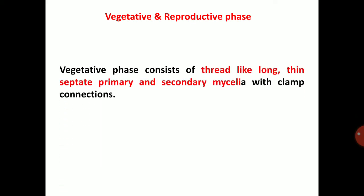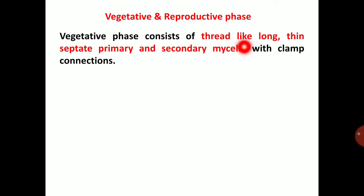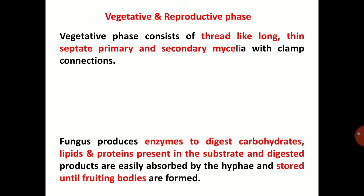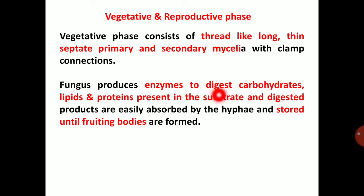The vegetative phase consists of thread-like, long, thin, septate primary and secondary mycelia with clamp connections. The fungus produces enzymes to digest carbohydrates, lipids, and proteins present in the substrate, and the digested products are easily absorbed by the hyphae and stored until fruiting bodies are formed.